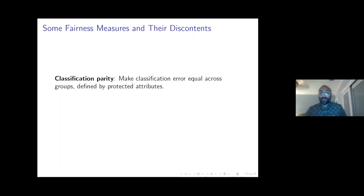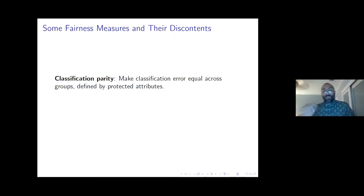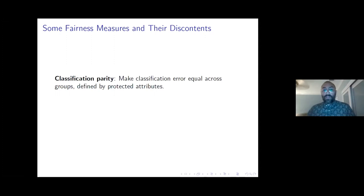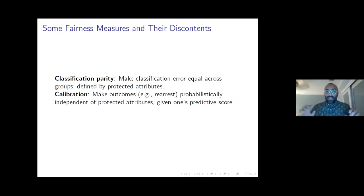Moving on to the next two measures, which I'll present in tandem because they seem similar and have been at the heart of more controversies. The first is classification parity: make classification errors equal across groups defined by protected attributes — error rates should be equal for men and women, or black and white defendants. Calibration, in contrast, asks that your scores mean the same thing for each person across protected attributes — if I judge someone as 50% likely to commit a crime and I'm doing my job well, there should be about a 50% chance they go on to commit one.